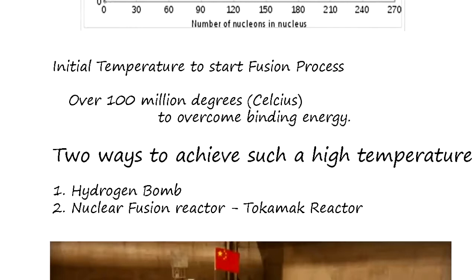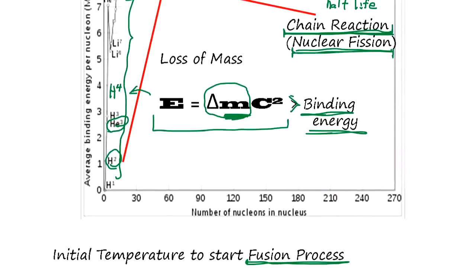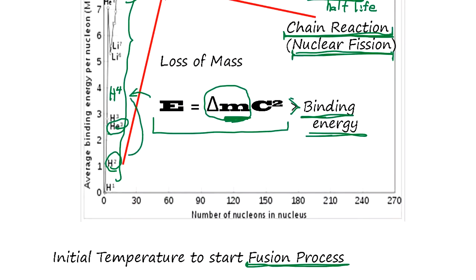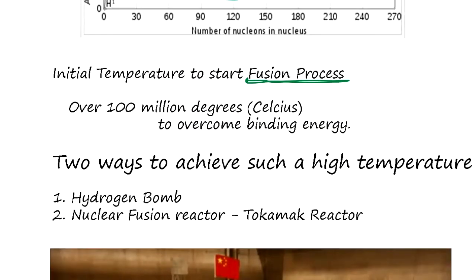Initial temperature to start the fusion process, this nuclear reaction, is over 100 million degrees Celsius to overcome binding energy. When you give that much, it goes beyond the binding energy. It's like energy potential. You have to give that much energy initially to go over, so it drops and you get energy out. Two ways to achieve such a high temperature.